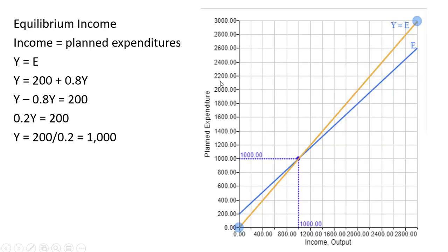We can find that graphically. That's going to occur where our expenditure line intersects this 45 degree line. This 45 degree line shows all points where income equals planned expenditure, and that intersects right here.